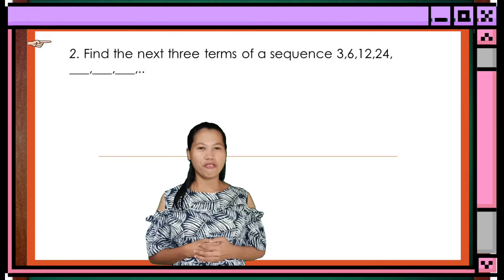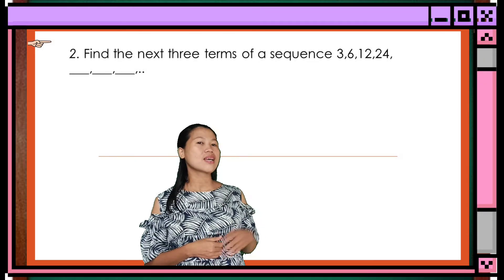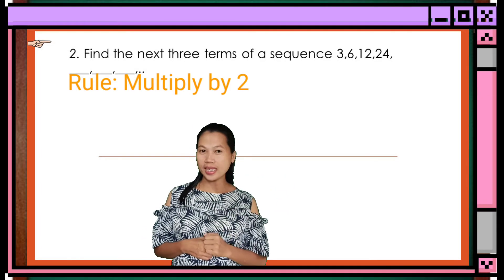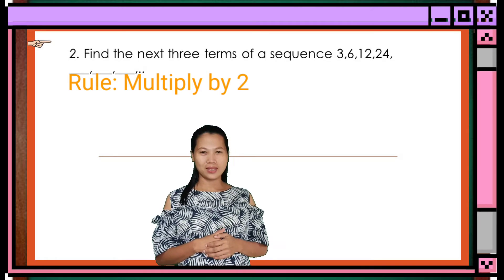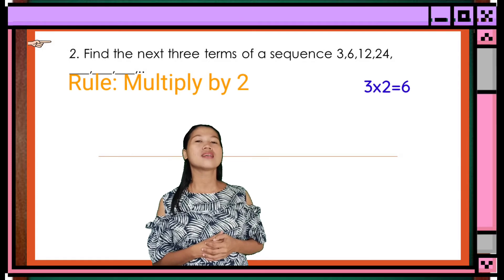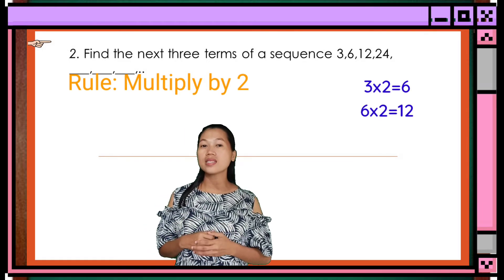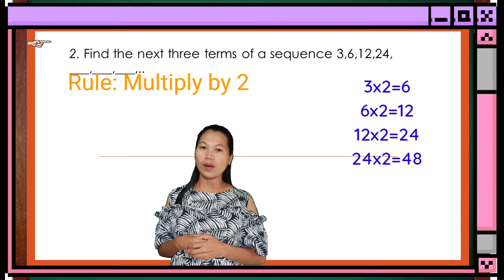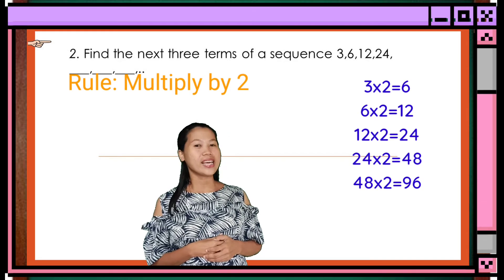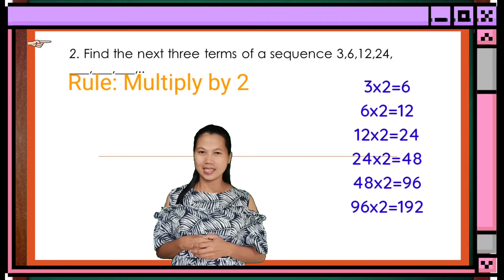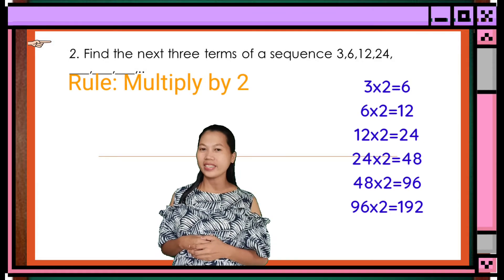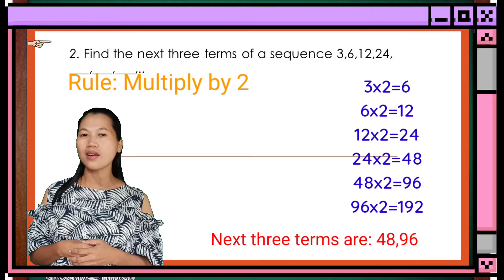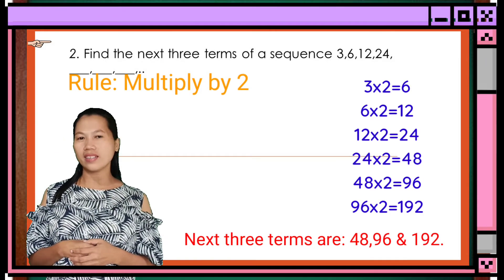Another example: find the next 3 terms of a sequence 3, 6, 12, 24, blank, blank, blank. The rule is multiply by 2. 3 times 2 equals 6. 6 times 2 equals 12. 12 times 2 equals 24. 24 times 2 equals 48. 48 times 2 equals 96. 96 times 2 equals 192. Therefore, the next 3 terms of the sequence are 48, 96, and 192.